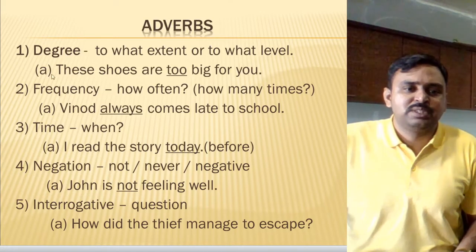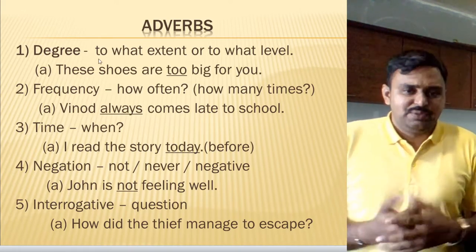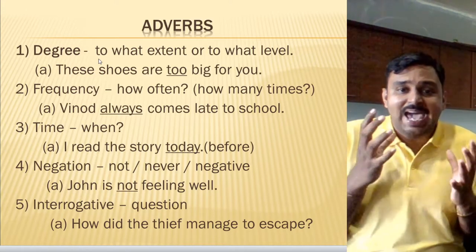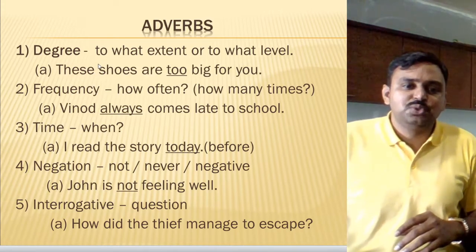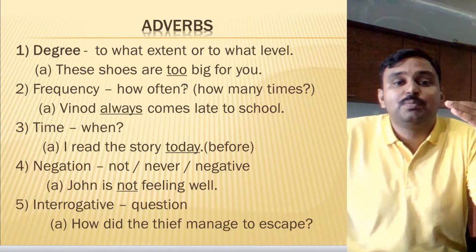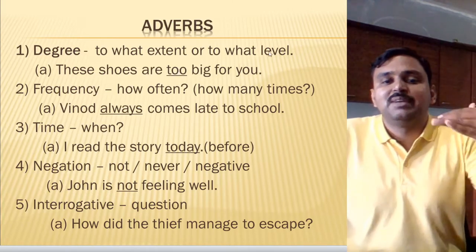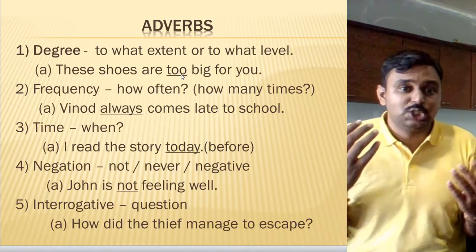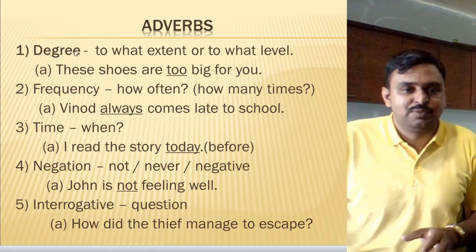We have different types of adverbs: degree, frequency, time, negation, and interrogative. First, we have adverb of degree. It tells you to what extent or to what level a particular action has happened. For example, 'These shoes are too big for you' — the shoes are big, but how much? Too big. Similarly, 'I am extremely happy' — I am happy, but how much? Extremely. So adverb of degree shows the level of the action.